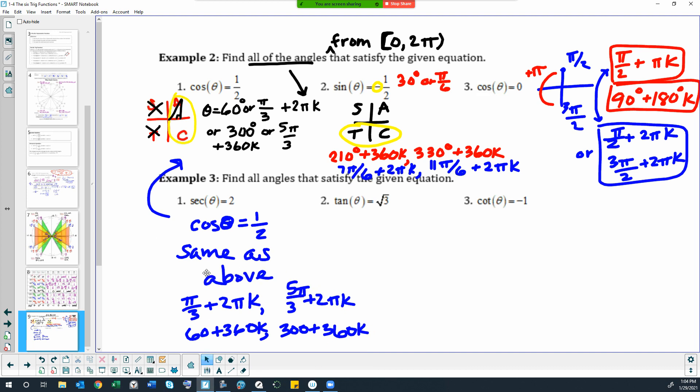Number two then. Number two tangent is square root of three. Let's go ahead and just put that in that triangle really fast. So all students take calculus. Tangent is positive here and here.